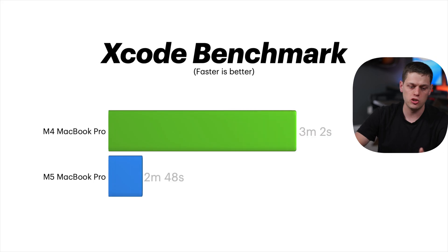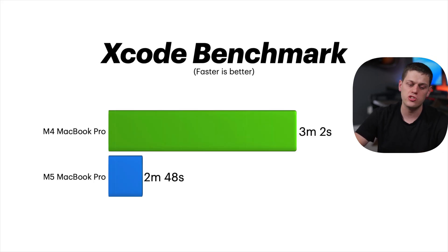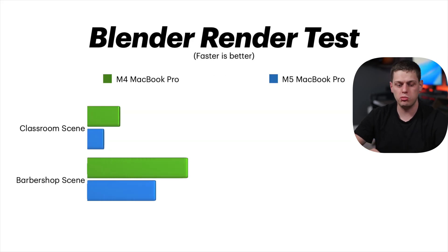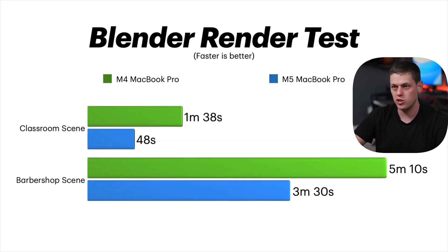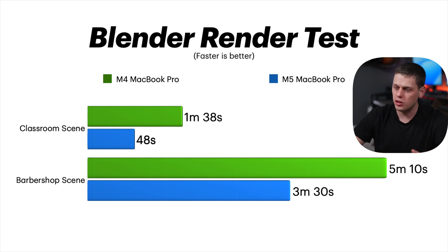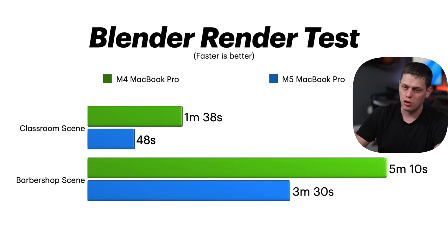Several of the next tests were pretty close. Running the Xcode benchmark, I compiled code on the M4 in three minutes and two seconds, and on the M5 it was two minutes and 48 seconds — a nice subtle improvement. I also loaded both the Blender classroom scene and the Blender barbershop scene and ran them using the GPU, and I noticed some substantial benefits with the M5, not quite double the speed but significantly faster for rendering in Blender.